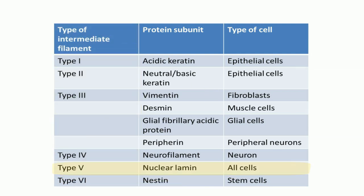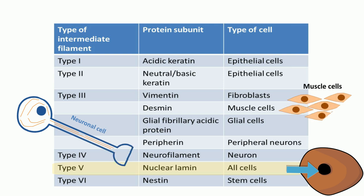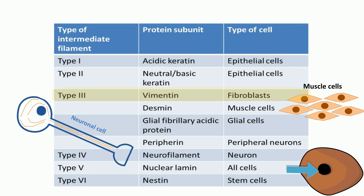The lamins are found in all cells because they are found in the nucleus. However, some intermediate filaments are associated and found specifically in certain cell types. For example, vimentin is the intermediate filament found in fibroblasts, and neurofilament is the intermediate filament found in neurons.